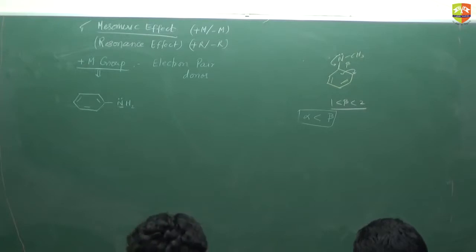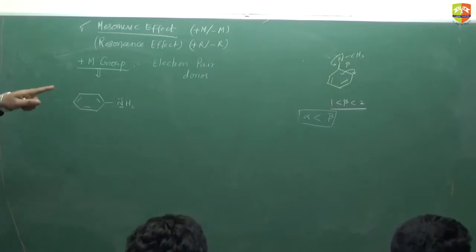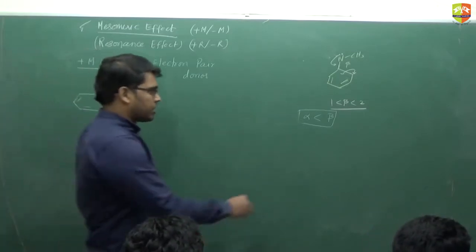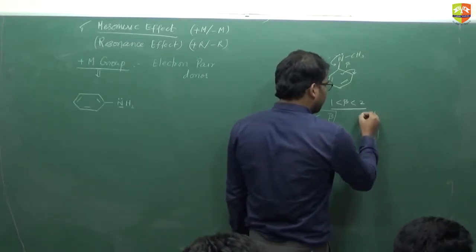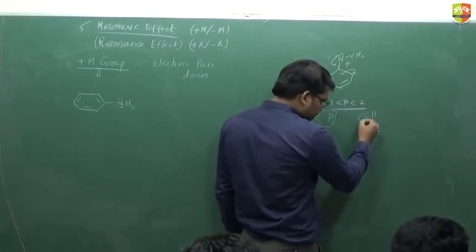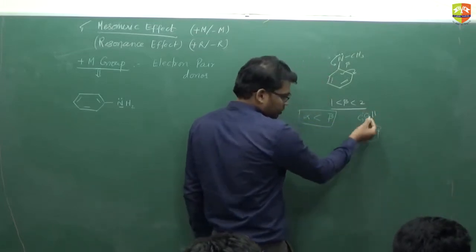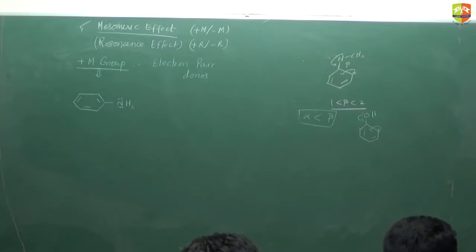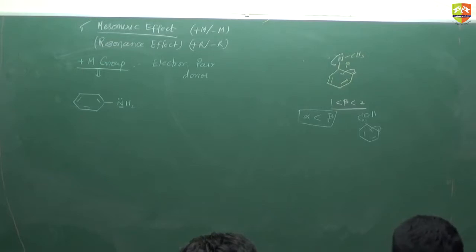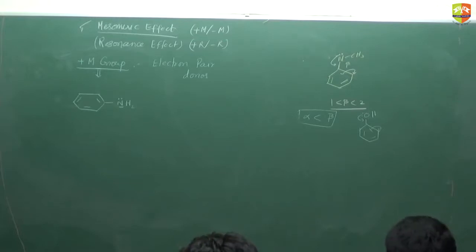A student asks about whether mesomeric effect also applies to the previous question. The instructor clarifies: yes, the resonating structures we draw — that is the mesomeric effect. When a group releases electrons to the ring, those resonating structures represent the mesomeric effect.